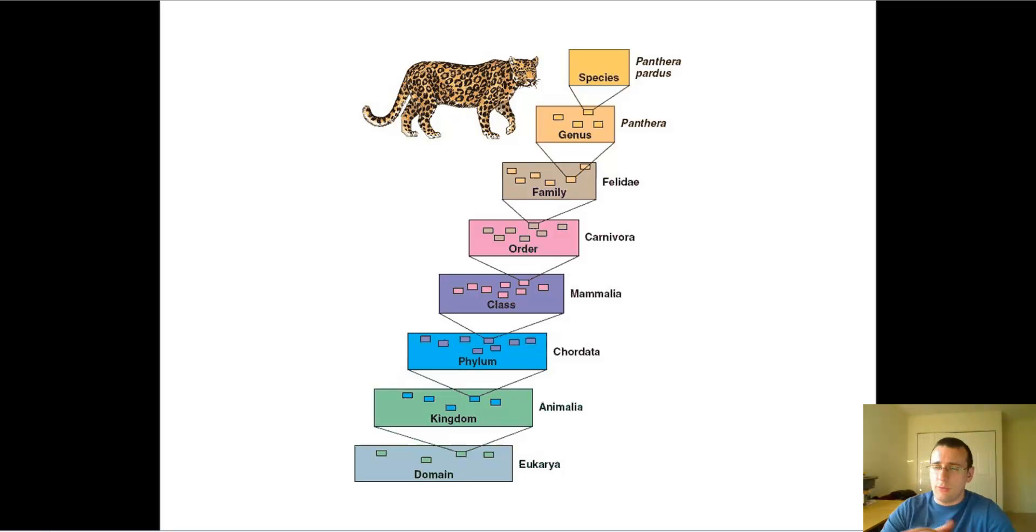So domain refers to the type of life that you are, mostly in terms of your ribosomal RNA. We'll talk more about this later in the lecture series. And you have three domains: the Eukarya domain, the Eubacteria domain, and the Archaea domain.